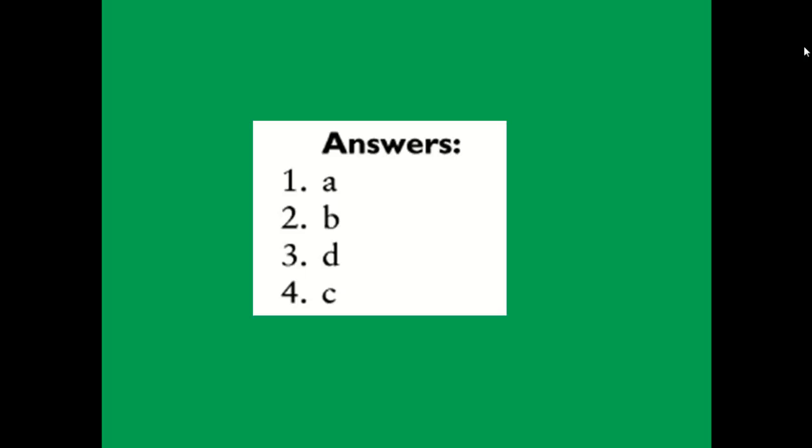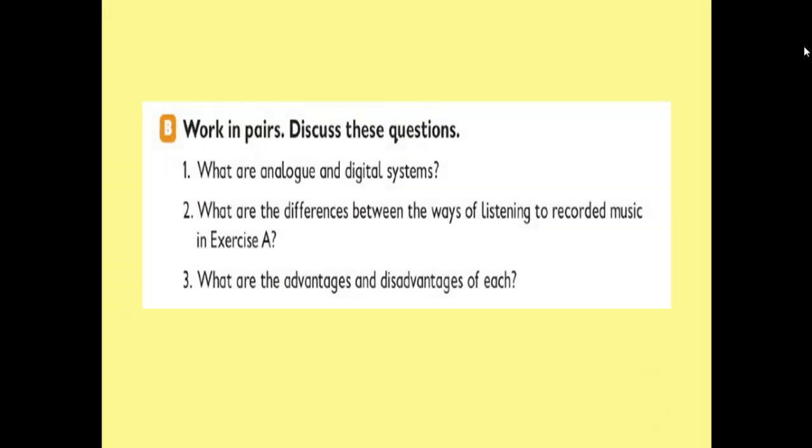The second one, number B, is cassette tape. Number C is an MP3 player, and number D is compact disc. Now, practice number B — work in pairs and discuss these questions.